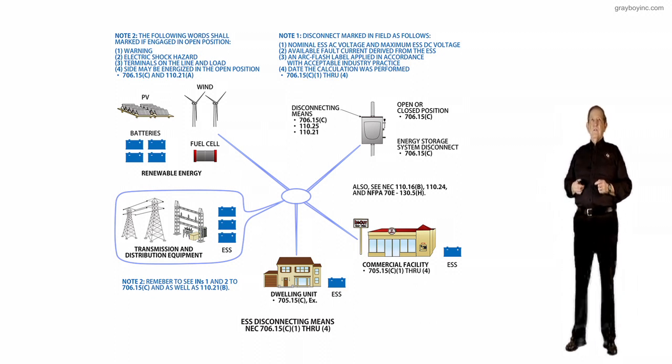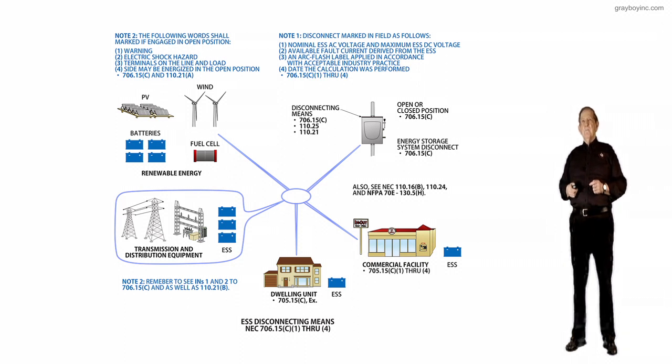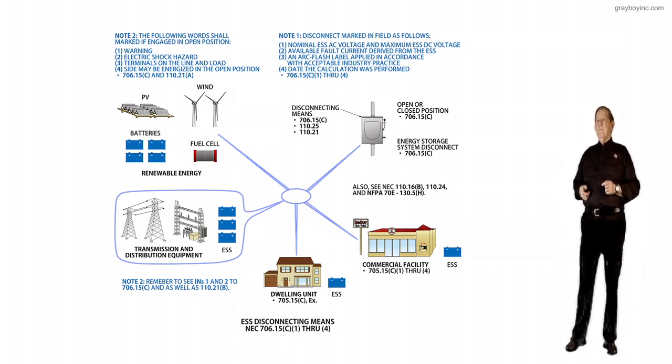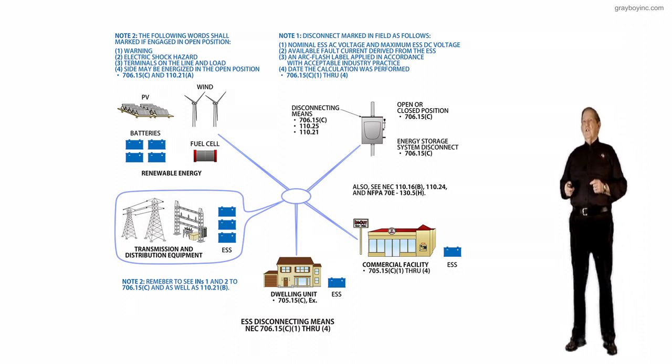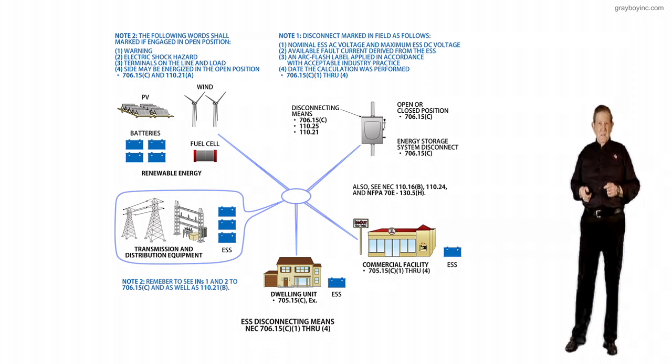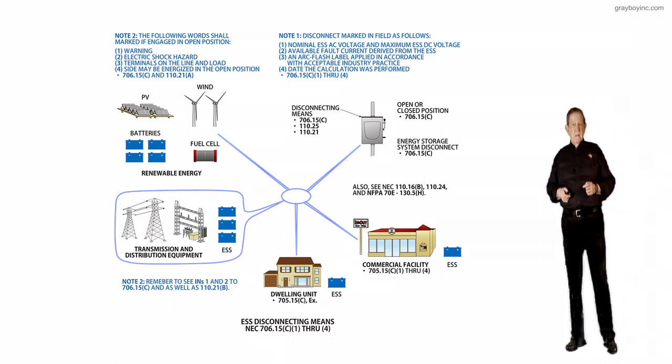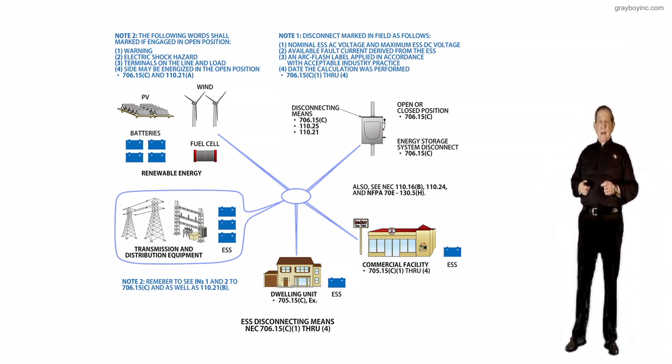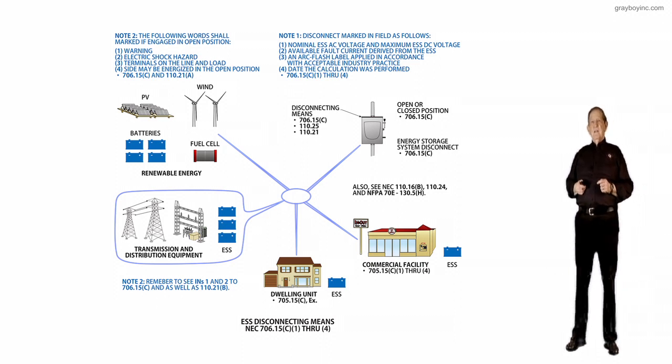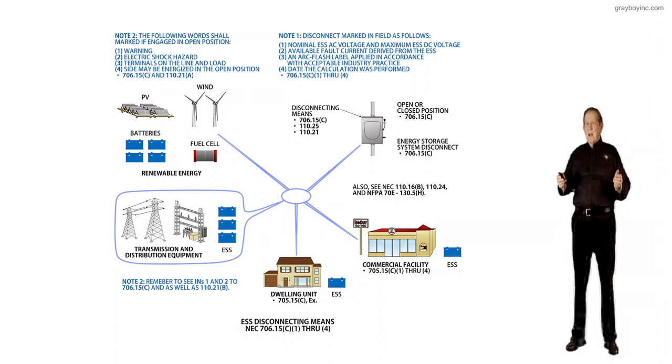Now, notice that we list some of these power sources, and notice we say you need a disconnect for those. And if you look at the call-out, readily accessible disconnecting means, we would need to review 706.15A1 through A3, as in Apple, to get clearer information that pertains to this revision.